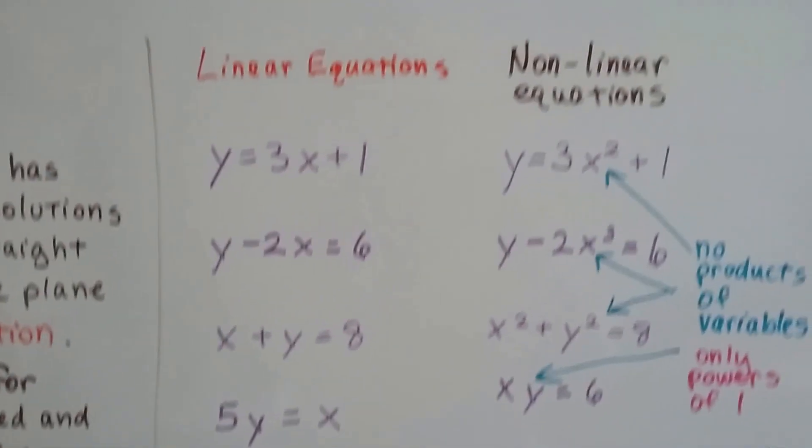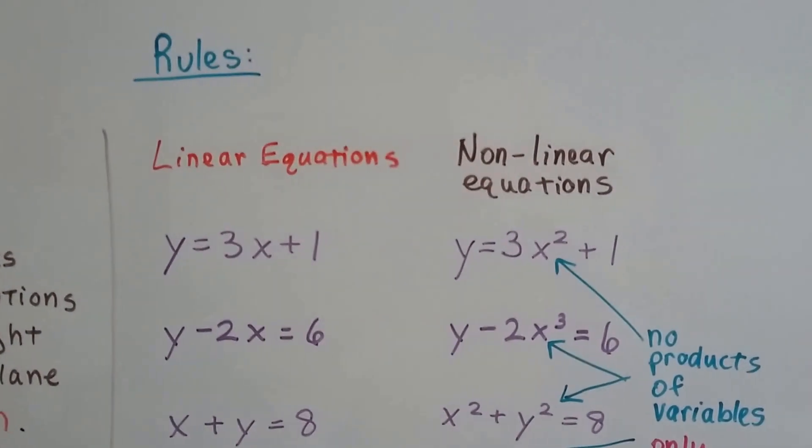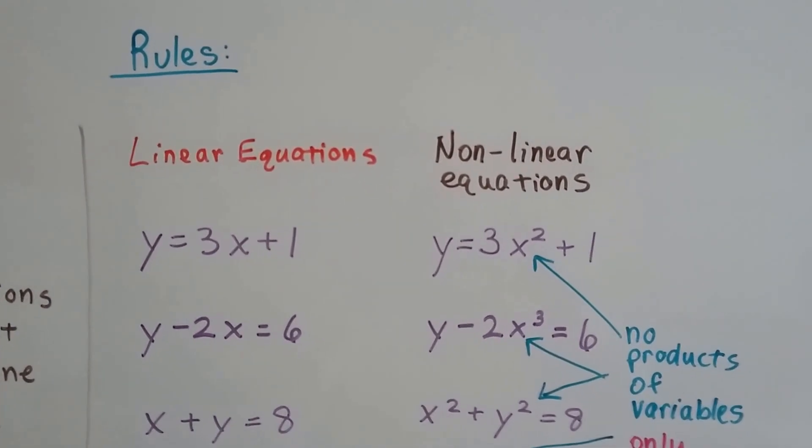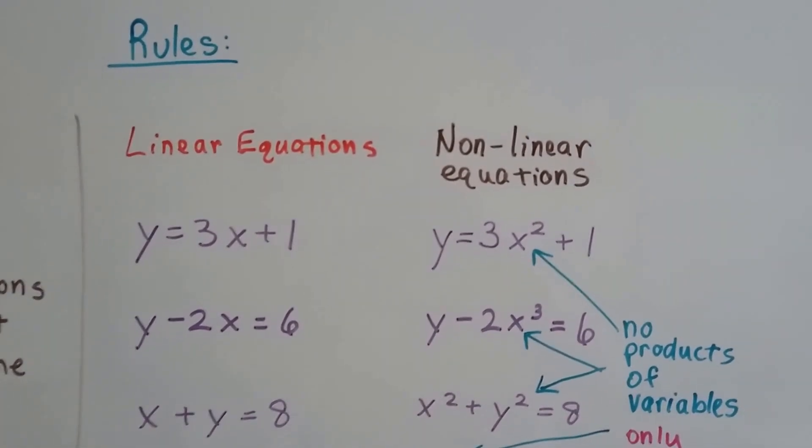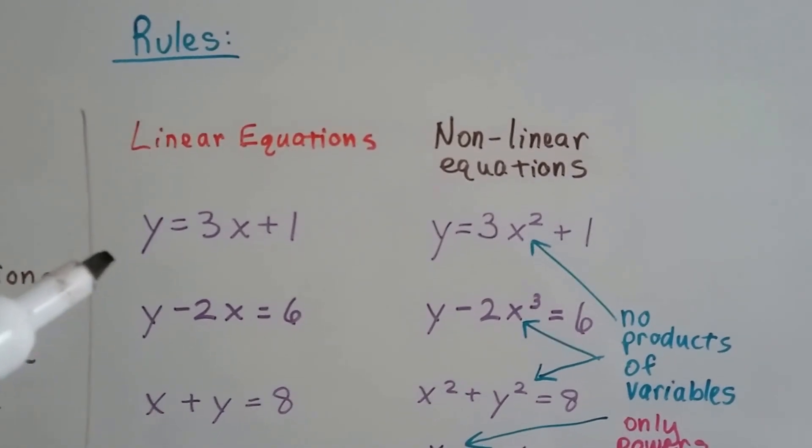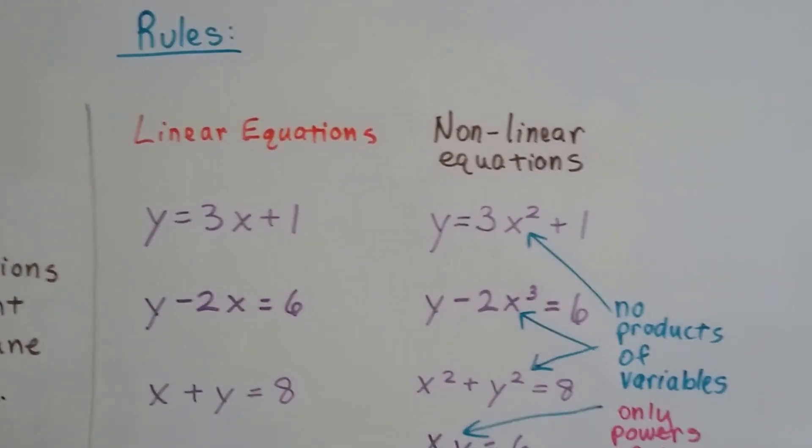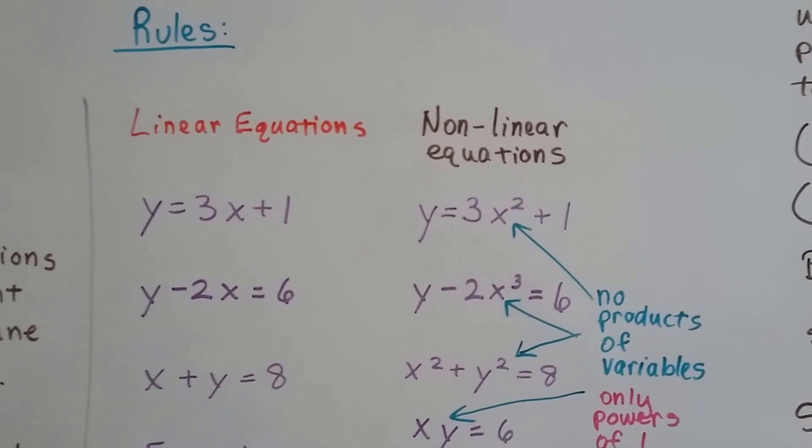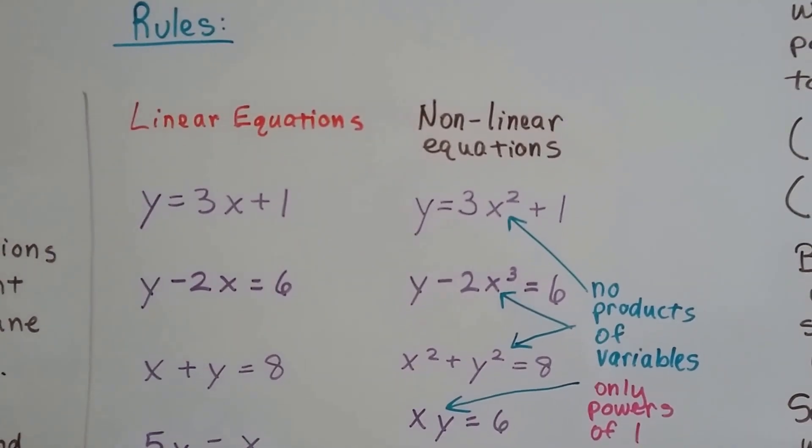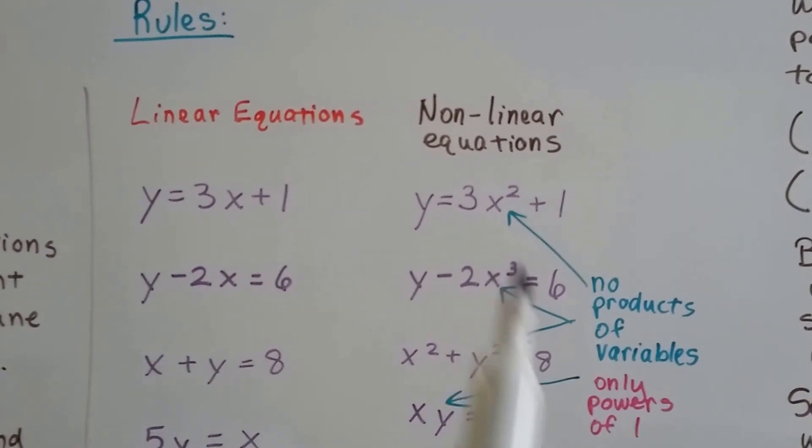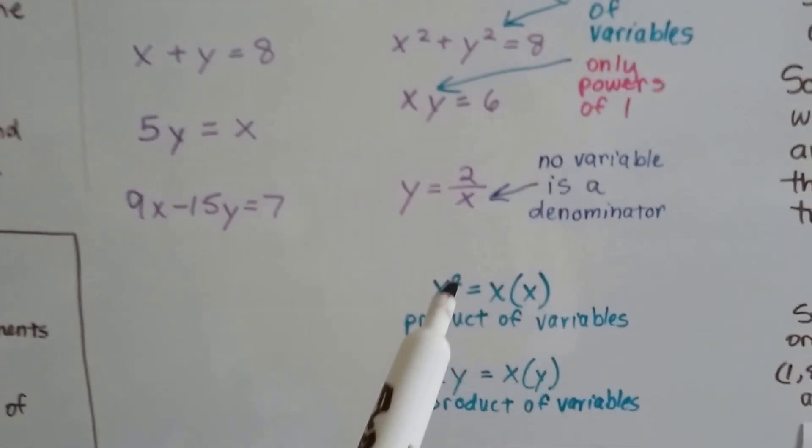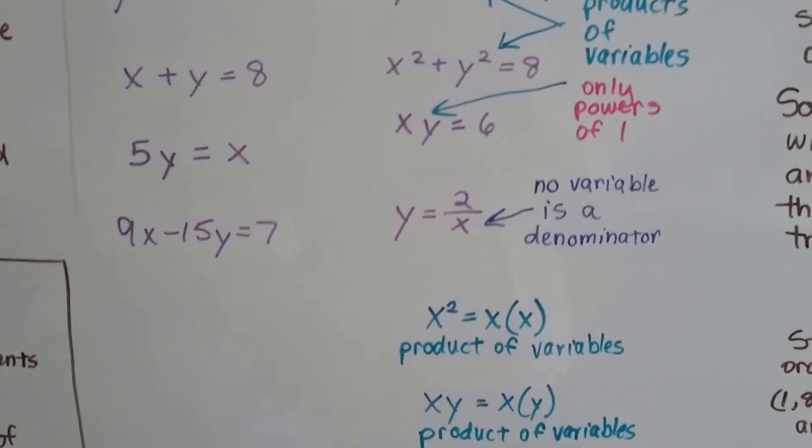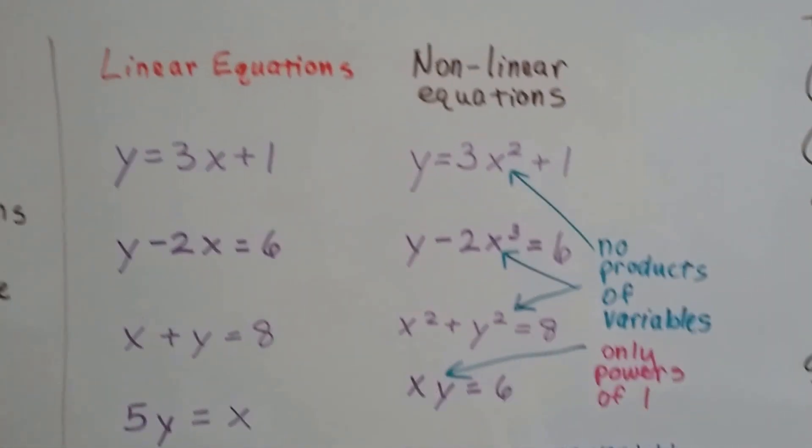On the left we have linear equations, and on the right column we have nonlinear equations. So, y equals 3x plus 1 is a linear equation. But if we stick an exponent on that x, nope, because that's products of variables. That would be when we have x squared, that means x times x, that's the product of variables. We can't have that, so that's nonlinear.